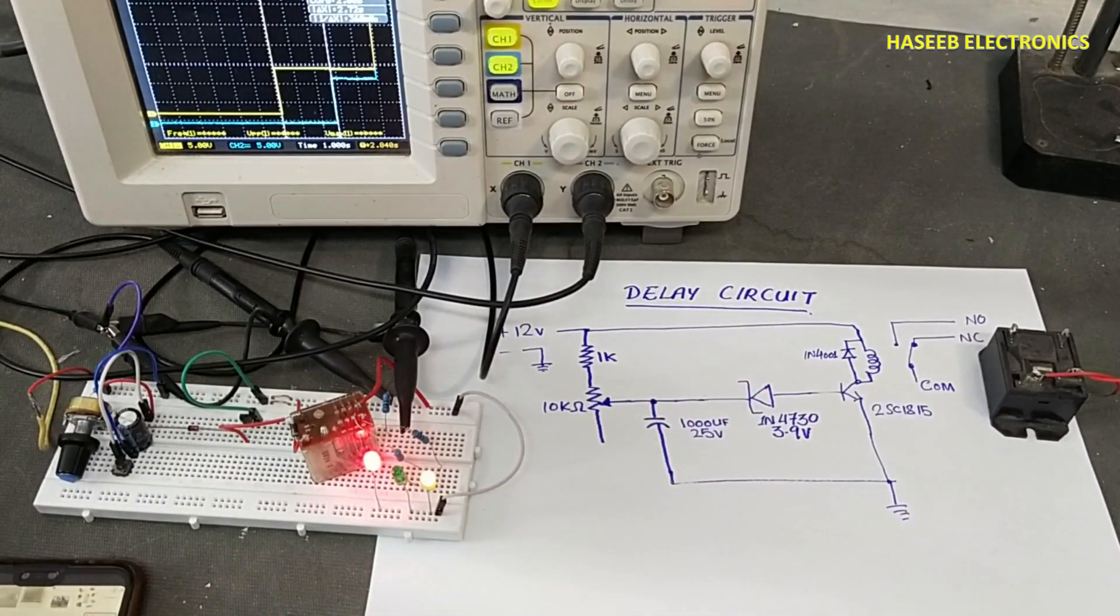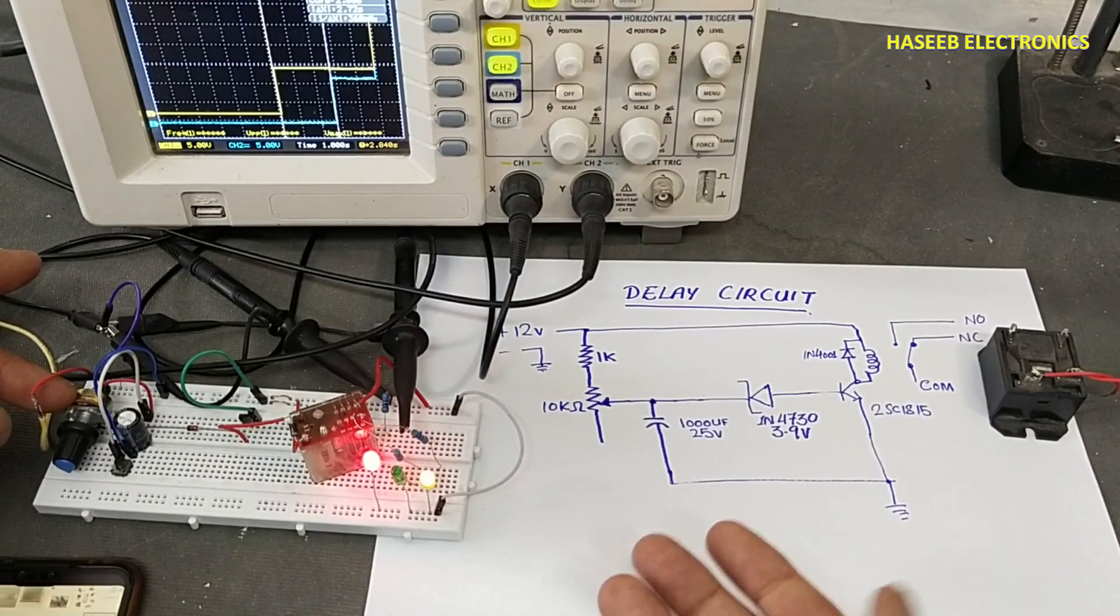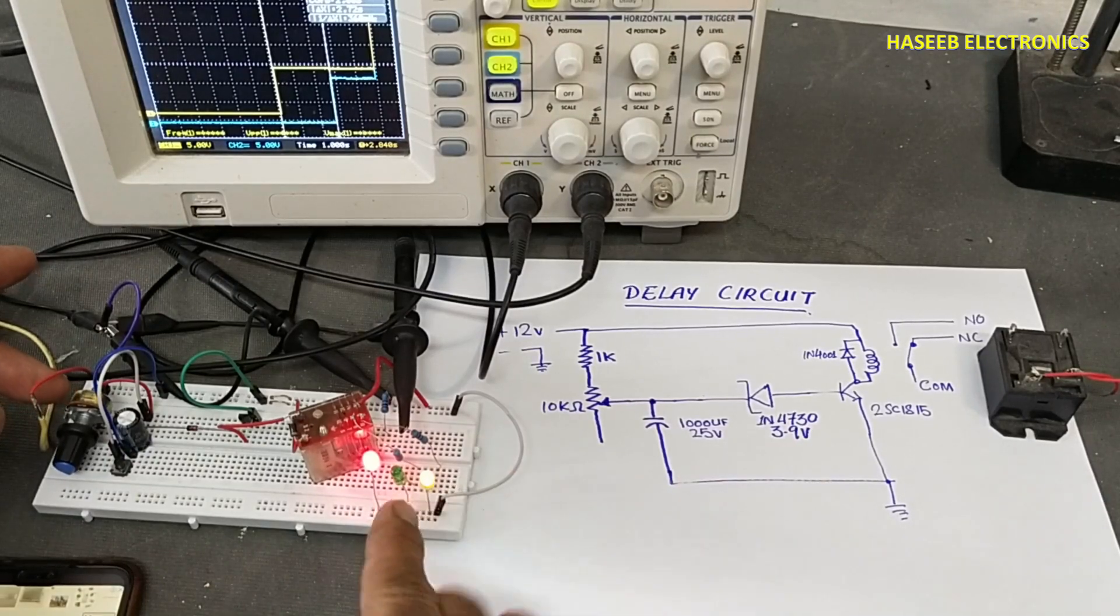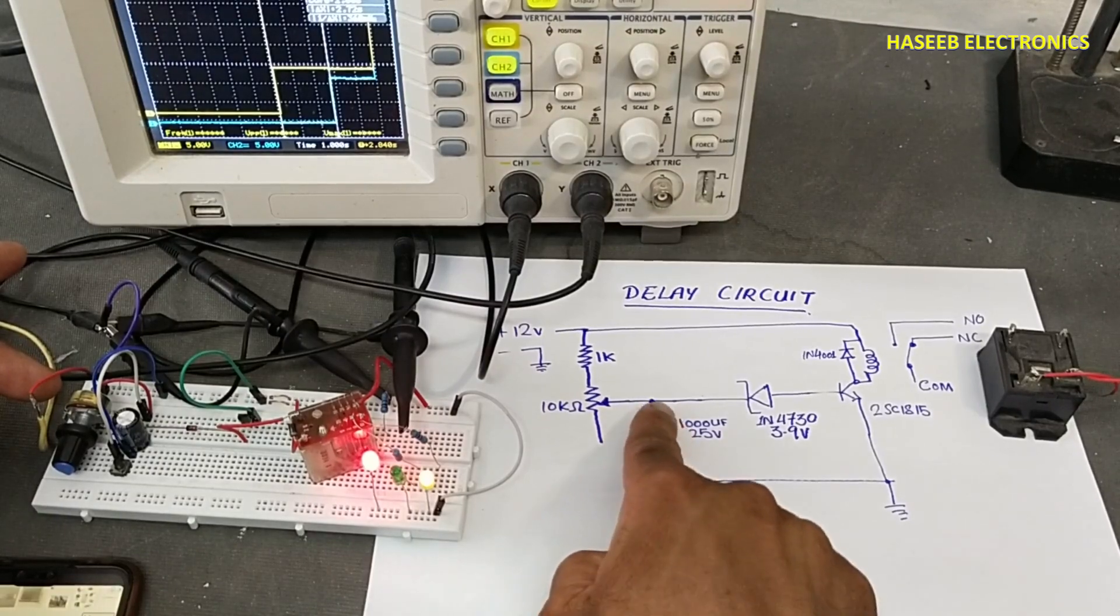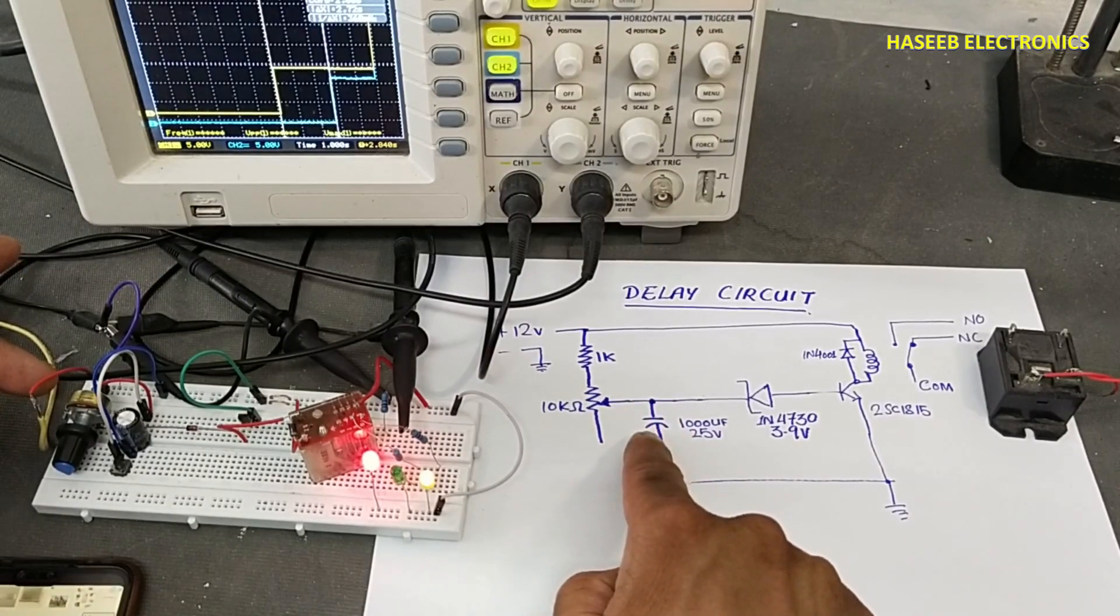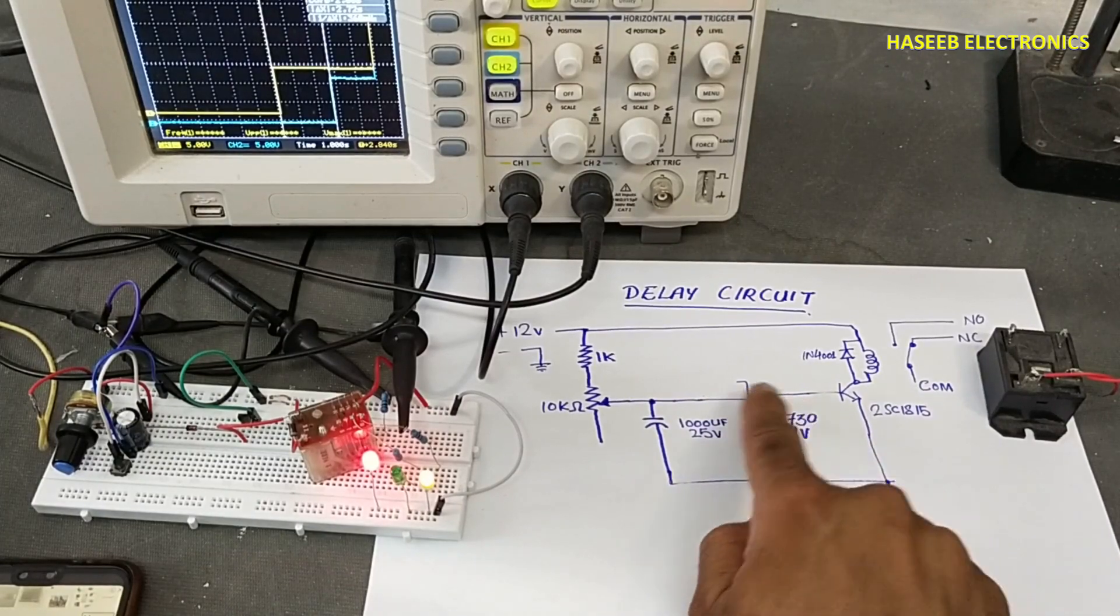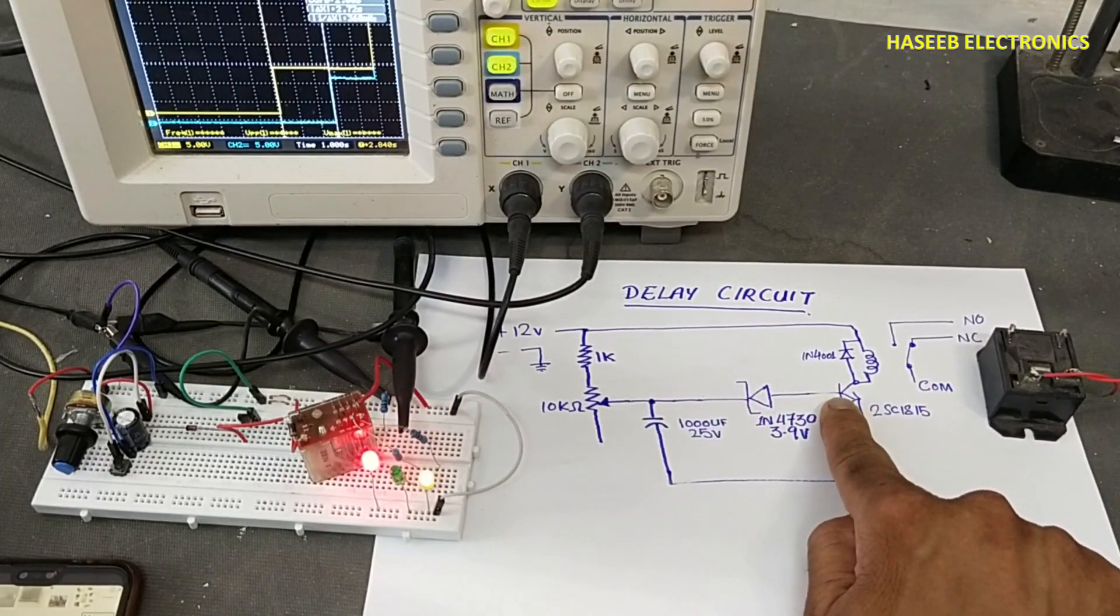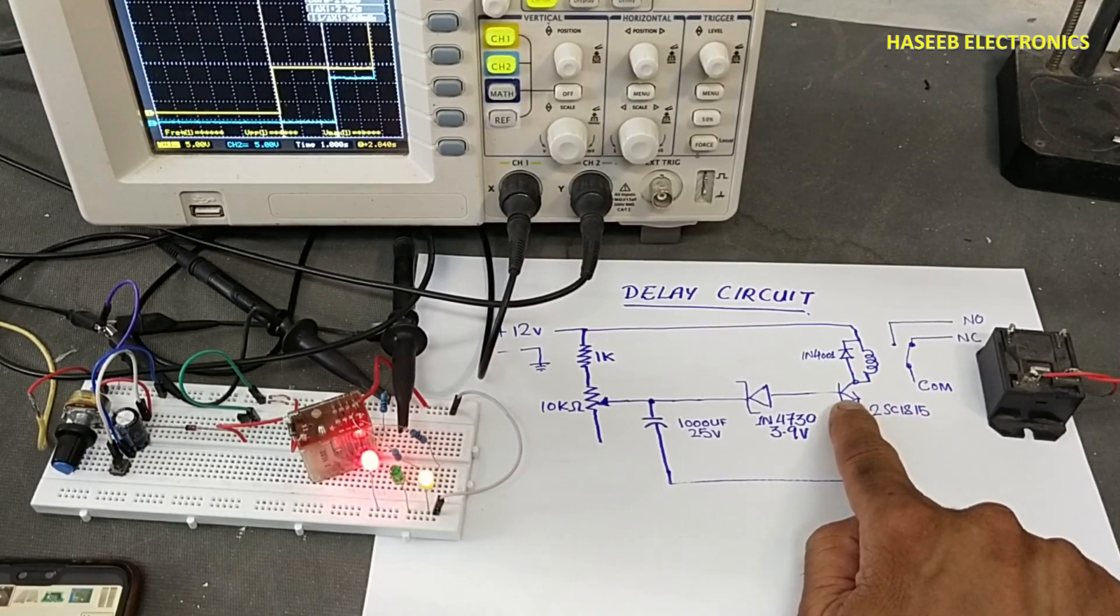If we add this resistance at 50 kilo ohms, at that time this charging time will increase. If you increase more resistance, for example 100 kilo ohms, this charging time will increase more because we are controlling the charging time of this capacitor. Until the voltage is less than this threshold, it will force this transistor to remain off because the transistor will not receive base current.